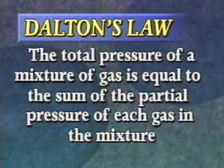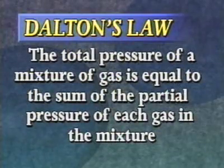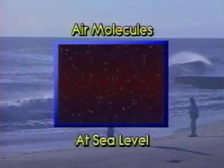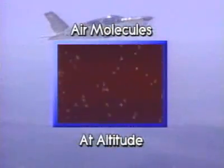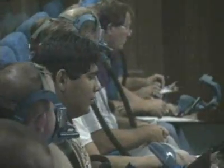Dalton's Law tells us that the total pressure of a mixture of gas is equal to the sum of the partial pressure of each gas in the mixture. As we ascend to altitude, total atmospheric pressure decreases because the partial pressure of the individual gases decreases. Remember, the percentage of oxygen at altitude does not change, but the partial pressure does. This decrease means less usable oxygen, which causes hypoxia, to be discussed in a later section.